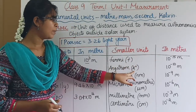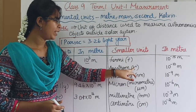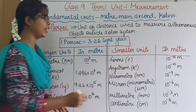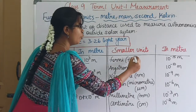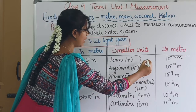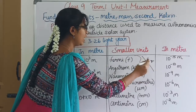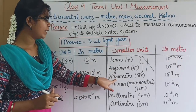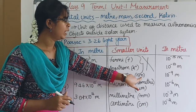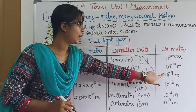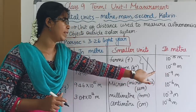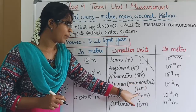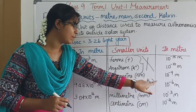Angstrom, symbol Å (capital A with degree symbol): this is 10 power minus 10 meters. Nanometer: this value in meters is 10 power minus 9 meters. Micron, which is micrometer, symbol μm: 10 power minus 6 meters.